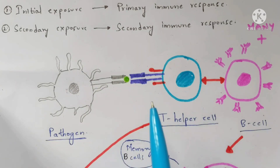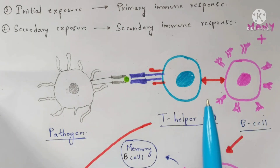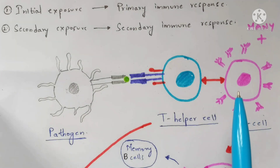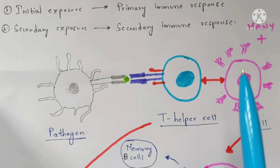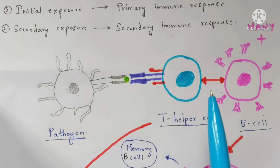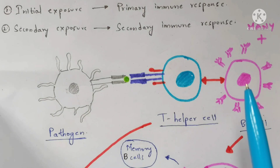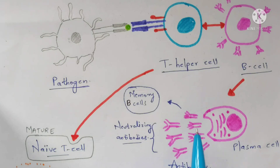Now, this T helper cell will get interacted with B cells. B cells are found among the WBCs in the blood and play a major and vital role in the immune response. Not only one B cell — many types of B cells will interact with many types of T helper cells. These B cells will then get proliferated into plasma cells, which is very important.